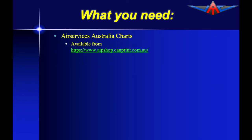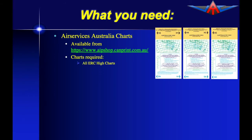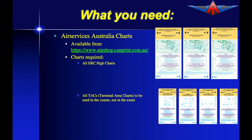You will need a number of Air Services Australia charts, available from a number of places. First of all, you will need all the high charts, and for my course, you will also need four sets of terminal area charts. These are not listed as required documents in the CASA exam, so you will probably be given information out of these in the exam questions.